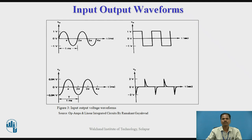This figure shows the input-output waveforms for the differentiator circuit. If the input is a sine wave signal, the output is a cosine wave signal: when the input sine wave is at zero level, the output cosine wave is at peak level; when the input sine wave is at peak level, the output cosine wave is at zero level. If the input voltage waveform is a square wave signal, the output signal waveform is a spike wave signal. When input voltage is constant, the derivative of a constant is zero, so output voltage is zero. When the input voltage changes from one voltage level to another, output spikes are produced.